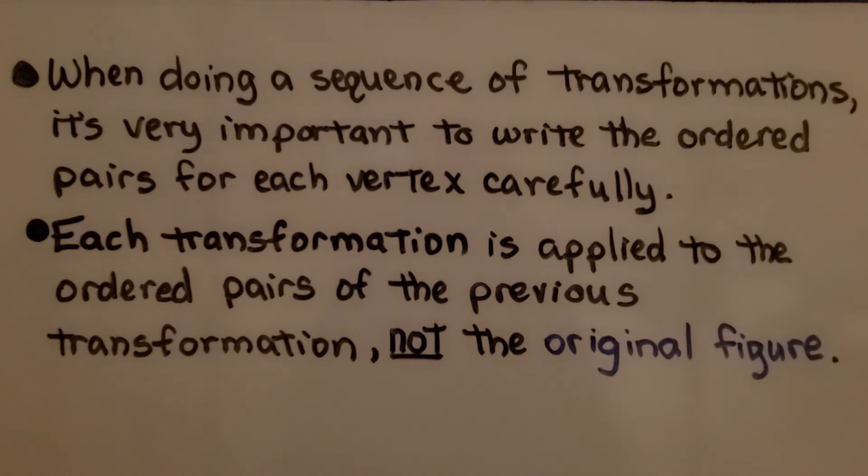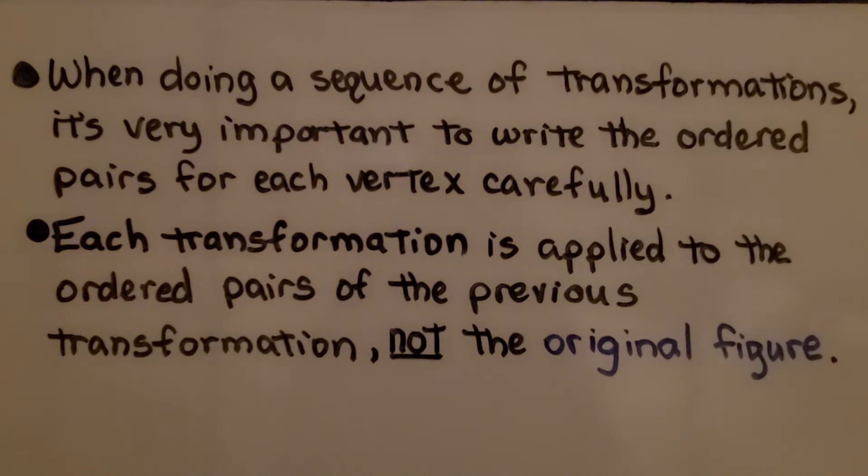When doing a sequence of transformations, it's very important to write the ordered pairs for each vertex carefully. Each transformation is applied to the ordered pairs of the previous transformation, not the original figure. So that means for each step we do, the next transformation only uses the previous one's ordered pairs.